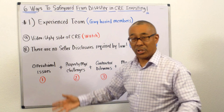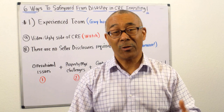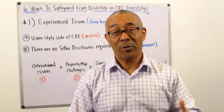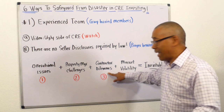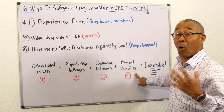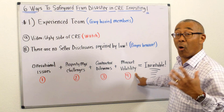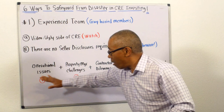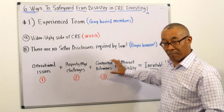If you're planning on getting into commercial — or you've been in it for a while — you are going to have operational issues, property manager challenges, and contractor dilemmas with plumbers, electricians, or contractors. And you're going to have market volatility — it's coming. These are what I call inevitable. So if you are a beginner, can you handle all of this? If not, you need an experienced team, someone with gray hair on your team.